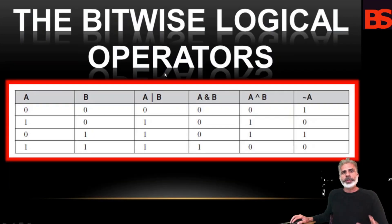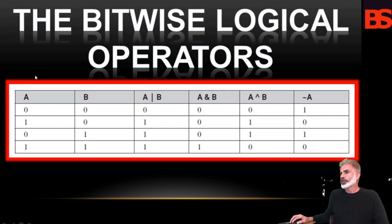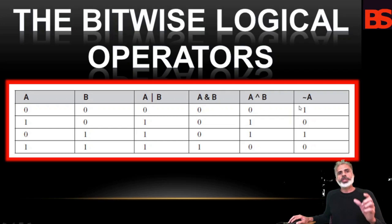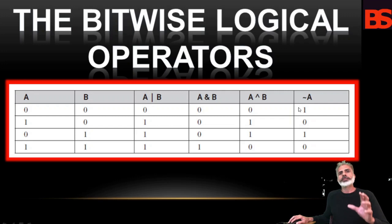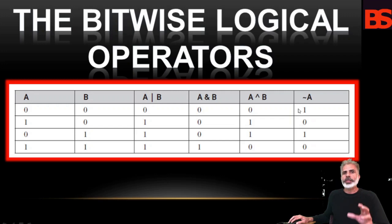The bitwise logical operators are OR, AND, exclusive OR, and unary NOT. You can see on the screen: this is the OR operator, this is the AND operator, this is exclusive OR, and this is the unary NOT operator. This table shows the outcome of each operation. Keep in mind that bitwise operators are applied to each individual bit within each operand.